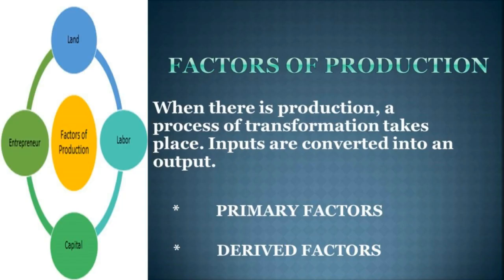Factors of production. When there is production, a process of transformation takes place — inputs are converted into an output. It is an economic term that describes the inputs used in the production of goods or services in order to make an economic profit. There are two types of factors: primary factors and derived factors.